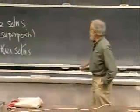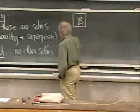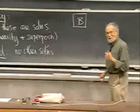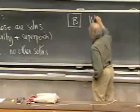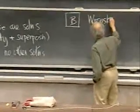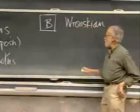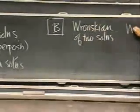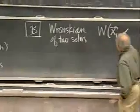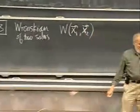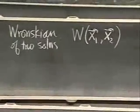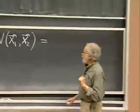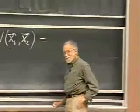Once again, we have our old friend the Wronskian back — the Wronskian of two solutions x1 and x2. They don't, by the way, have to be independent, just two solutions of the system. The Wronskian is a determinant, just like the old one was.